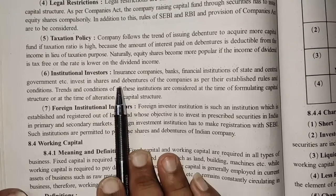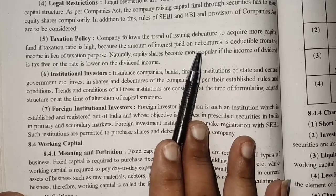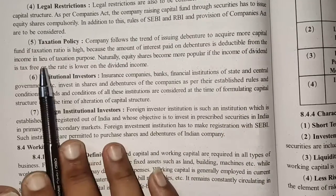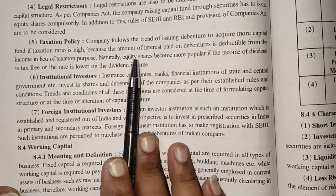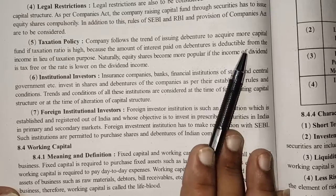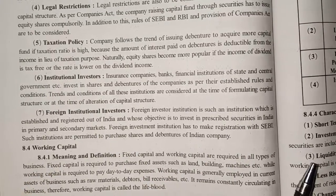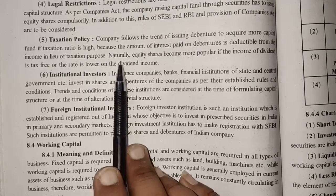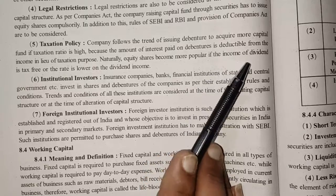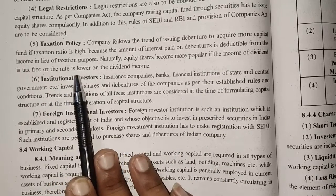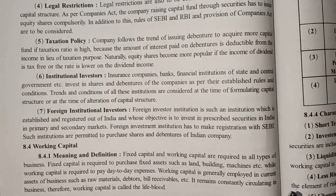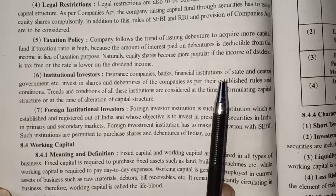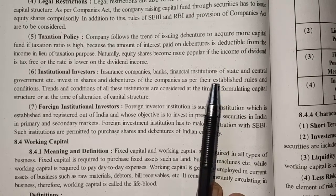Fifth external factor: taxes and policies. Companies follow the trend of issuing debentures to acquire more capital funds if the taxation ratio is high, because the interest paid on debentures is deductible from income for taxation purposes. Equity becomes more popular if dividend income is tax-free and the rate on dividend income is lower. The capital structure is decided based on whichever option is more tax-efficient.